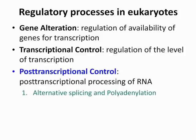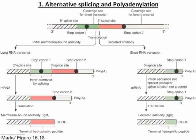Now we're on post-transcriptional control. The first topic is alternative splicing and polyadenylation. Before mRNA can become mature mRNA, it goes through splicing to remove introns. A 5' cap is added and a poly-A tail is added. The key point is that alternative splicing and polyadenylation are examples of post-transcriptional control.